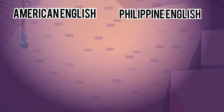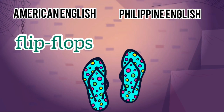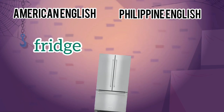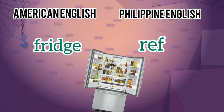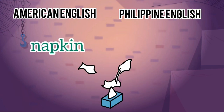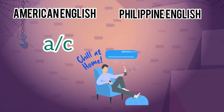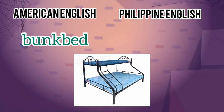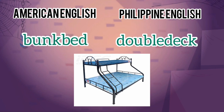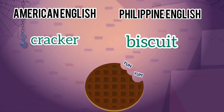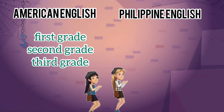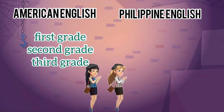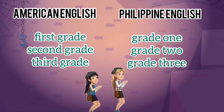In terms of usage, Americans call them flip-flops while Filipinos call them sleepers. Americans say fridge; Filipinos say ref. Americans say napkin; Filipinos say tissue. Americans say AC; Filipinos say aircon. Americans say bunk bed; Filipinos say double deck. Americans say cracker; Filipinos say biscuit. Americans use 1st grade, 2nd grade, 3rd grade, 4th grade, 5th grade, 6th grade; while in Philippine English, it's Grade 1, Grade 2, Grade 3, Grade 4, Grade 5, and Grade 6.